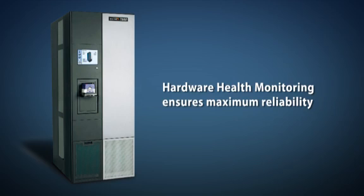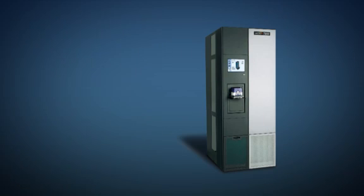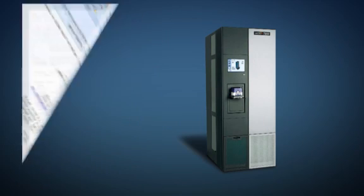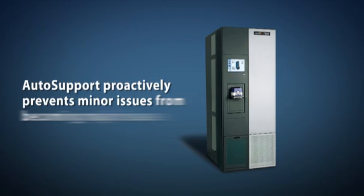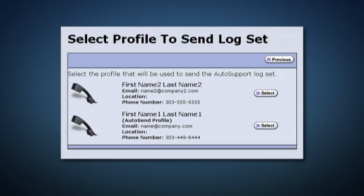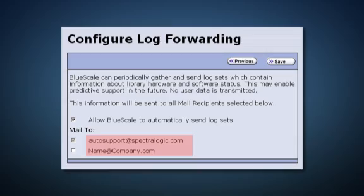Hardware health monitoring gives you the dashboard indicators you've been missing. BlueScale's AutoSupport feature will then proactively create and send a message on recommended maintenance — all before a minor issue becomes a major issue. AutoSupport allows the user to designate recipients to receive the notification; it could be your IT staff, go directly to Spectra's SpectraGuard support, or be received by both.